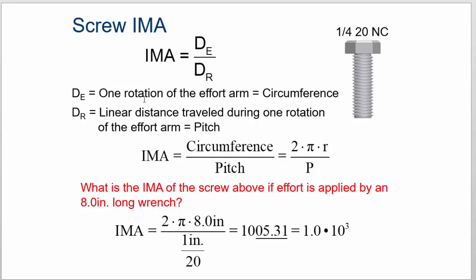we can change the DE and the DR into something a little more functional that we can deal with. And what we do is we say IMA is equal to the circumference of the screw divided by the pitch.